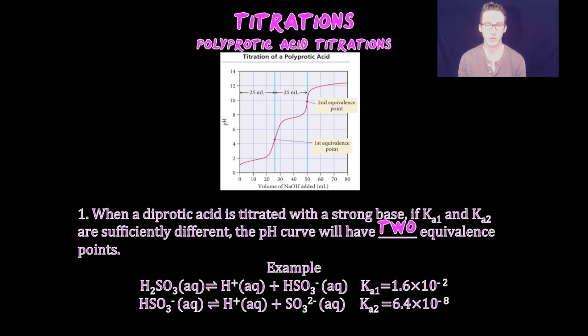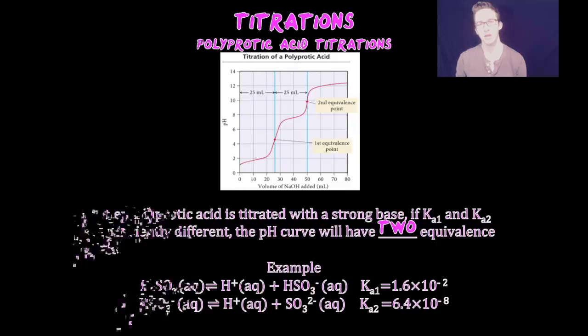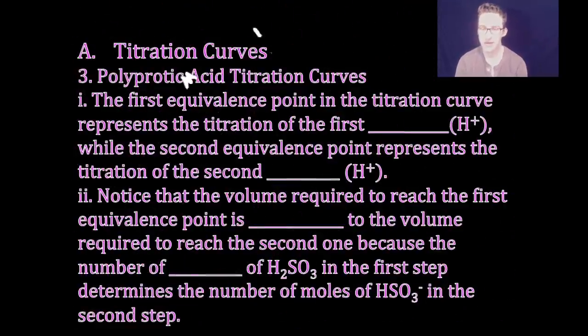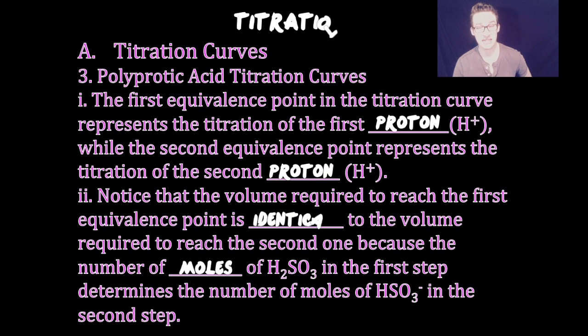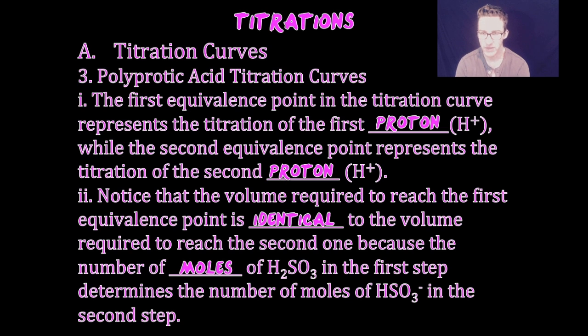The ionization of polyprotic acids occurs in steps. The volume required to reach the first equivalence point is identical to the volume required for the second, because the number of moles of H₂SO₃ in the first step determines the number of moles of hydrogen sulfite ion in the second step.